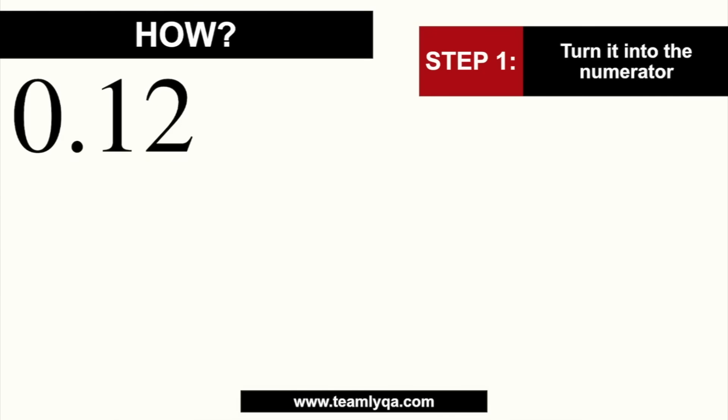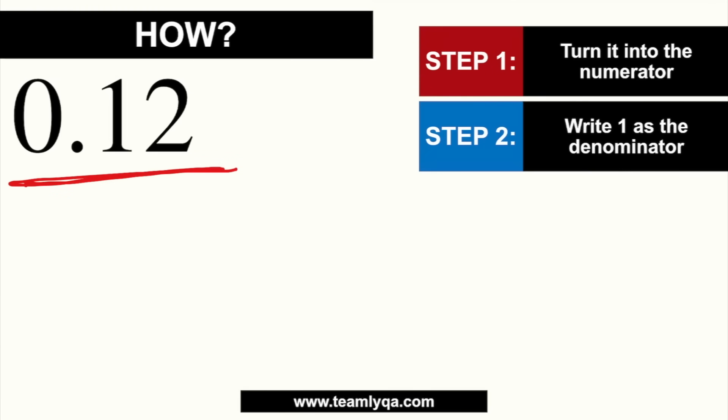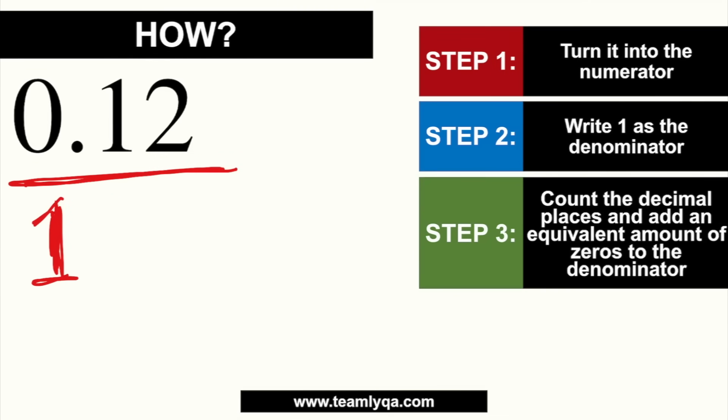Let's take this example: 0.12. This is a decimal. Sometimes in exams — civil service, OPCAT — they'll give an answer in one form but the options are in another. So if 0.12 is the answer but the fraction form is given as an option, how do you know what it looks like? How do you convert it? Step one: turn this into the numerator — the number on top of the fraction. So 0.12 goes on top. Step two: write 1 as the denominator.